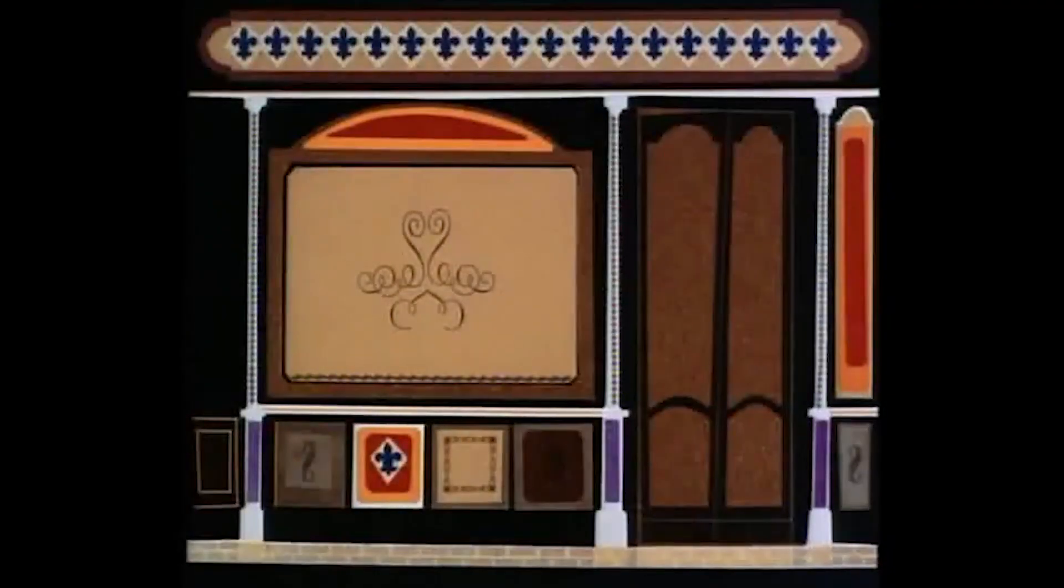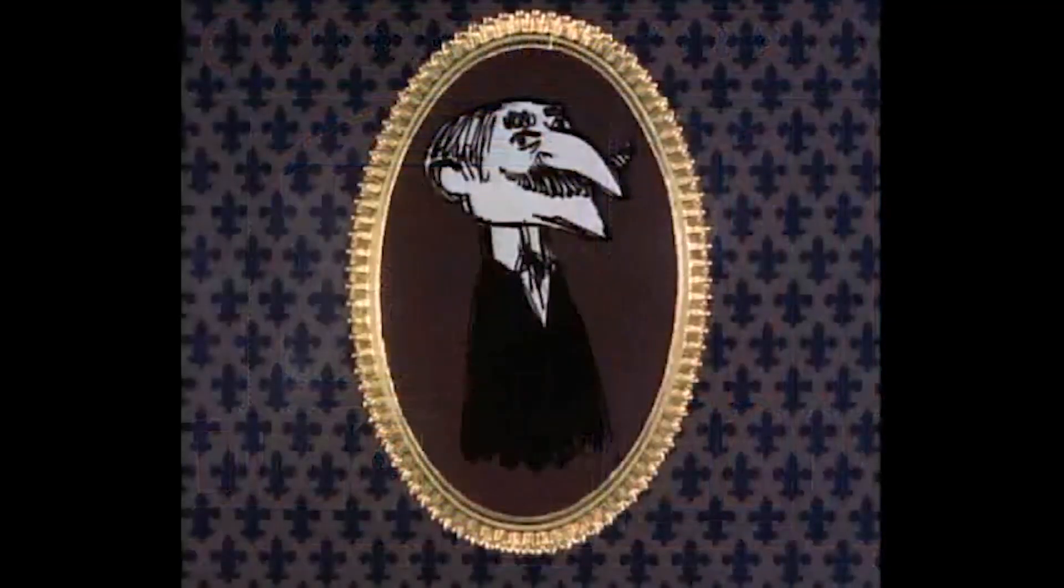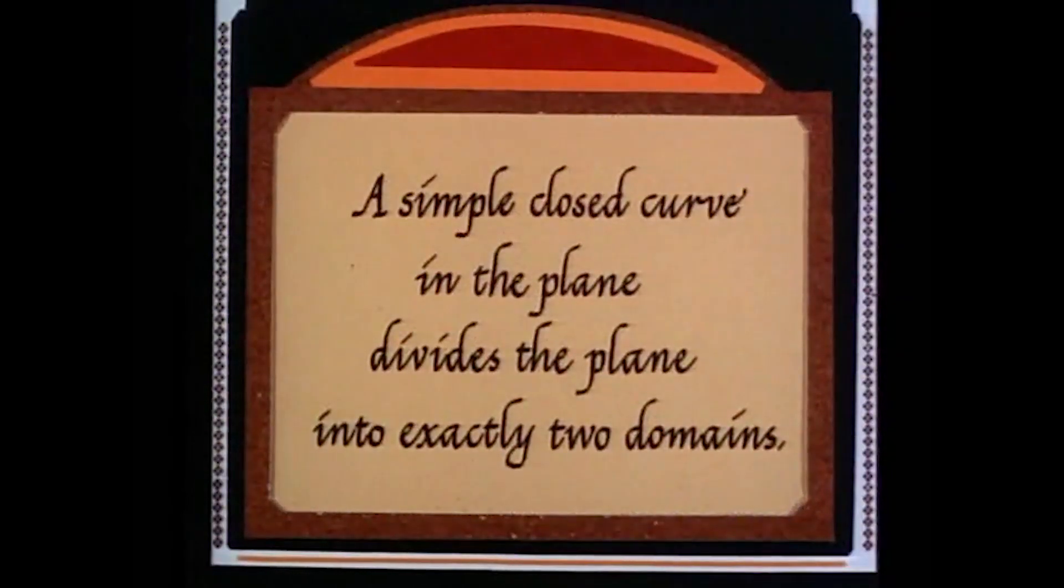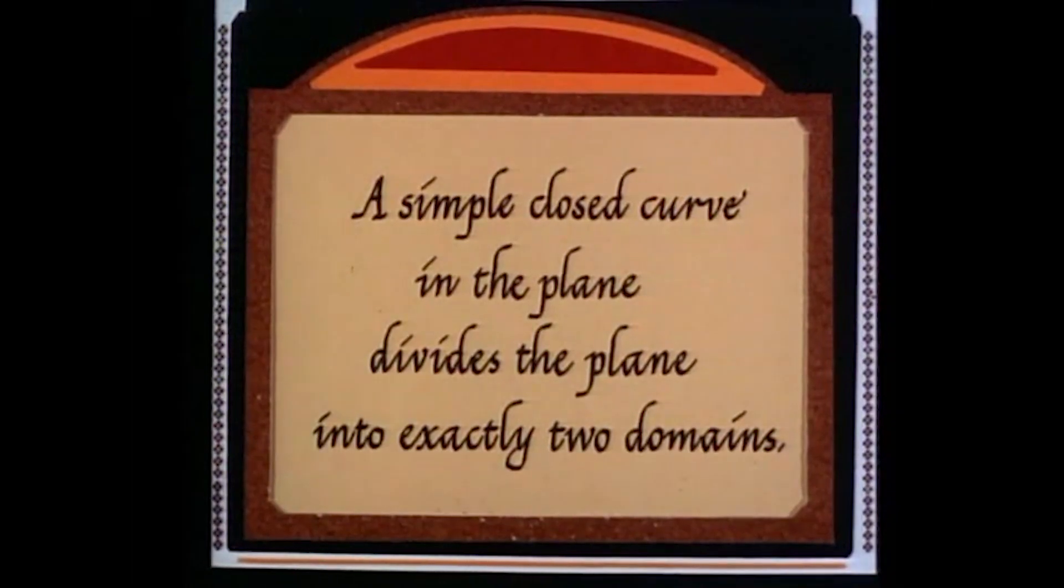About the turn of the century, the French mathematician Marie-Camille Jourdain stated, a simple closed curve in the plane divides the plane into exactly two domains.